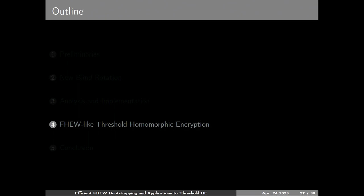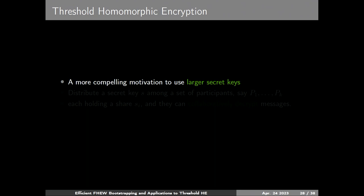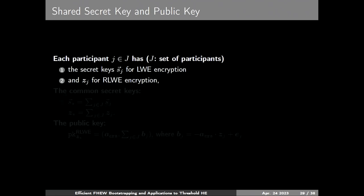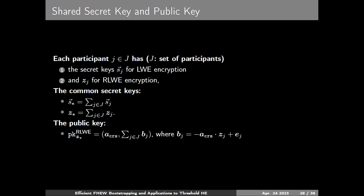Here is how to design an FHE-like threshold homomorphic encryption scheme. Threshold homomorphic encryption is a compelling motivation to use larger secrets: the secret key is distributed among participants and decryption is done collaboratively. Let j be the set of participants; each generates s_j and z_j as their own secret key. The common secret key is the sum of all s_j's and z_j's, so we cannot make s* small — we need bootstrapping for larger secrets.